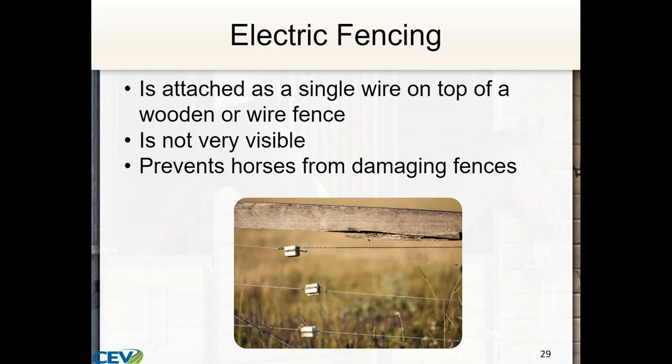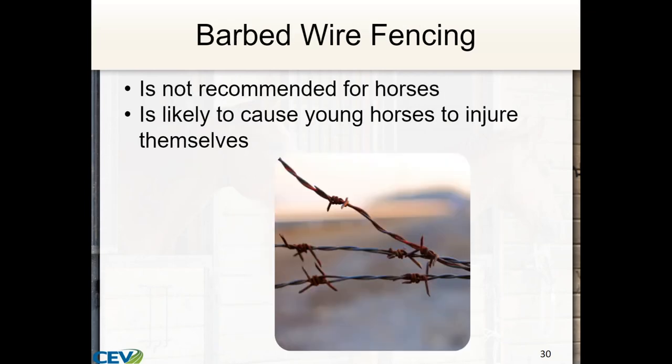Electric fencing is attached as a single wire on top of a wooden or wire fence. It's not very visible, but it will help prevent horses from damaging fences. Many places use the top wire as electric — once you get them trained to it, it works well. Barbed wire fencing is perhaps the most common in East Texas and is a great fence for cattle, but it is not good for horses. It is very likely to cause horses to injure themselves — not just young horses, old ones too.